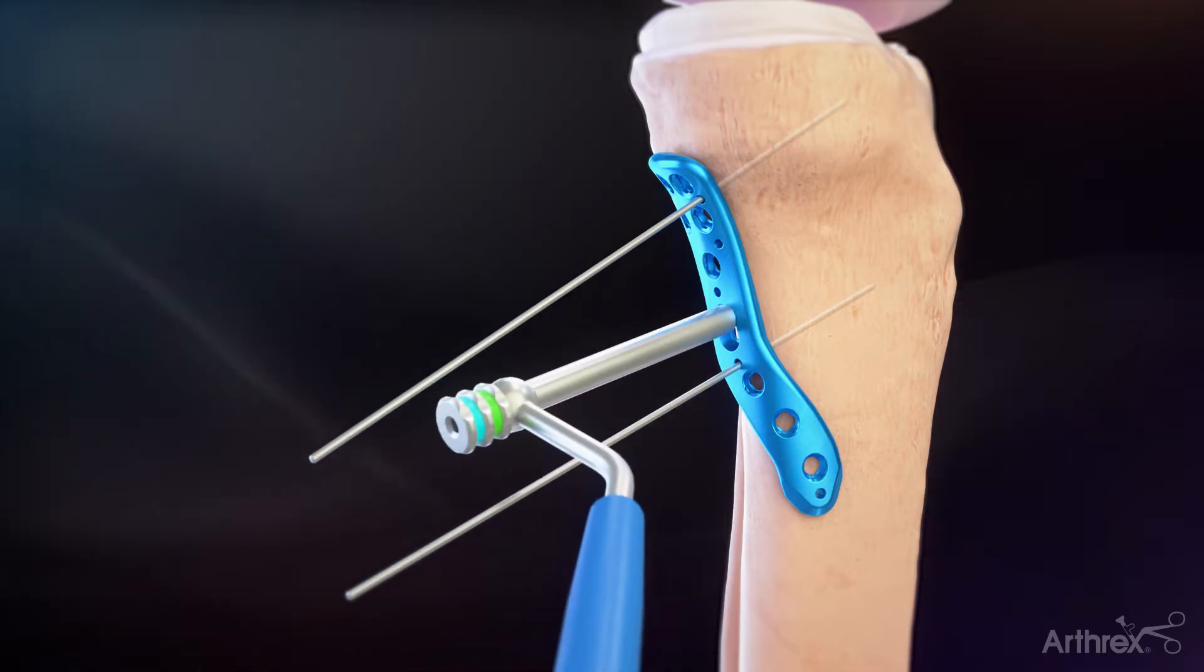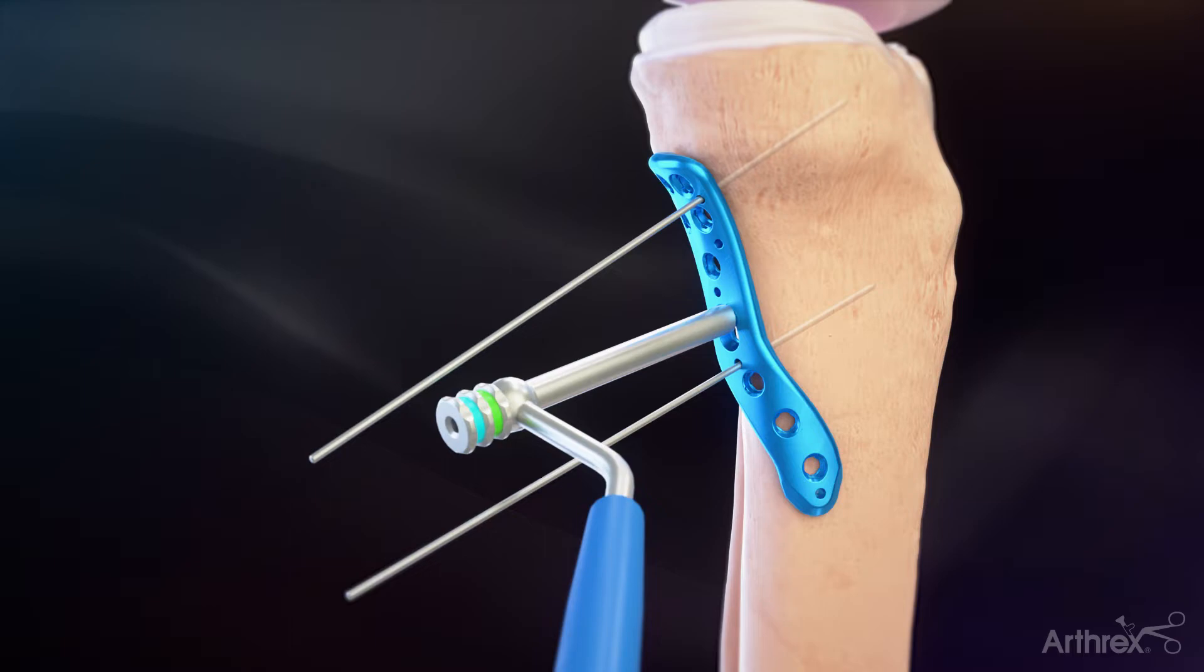The variable angle drill guide is comprised of the 2.8 mm drill guide threaded into the screw sheath and is used for 3.5 mm cortical or 3.5 mm variable angle locking screws.